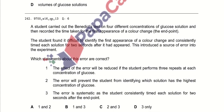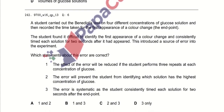A student carried out the Benedict test over four different concentrations of glucose solution and recorded the time taken for the first appearance of a color change. The student found it difficult to identify the first appearance of a color change and consistently timed each solution for two seconds after it had happened, introducing a source of error into the experiment. The error will prevent the student from identifying which solution has the highest concentration of glucose. The error is systematic.